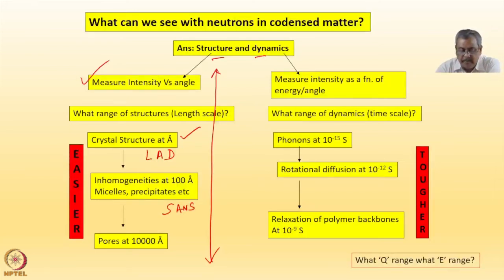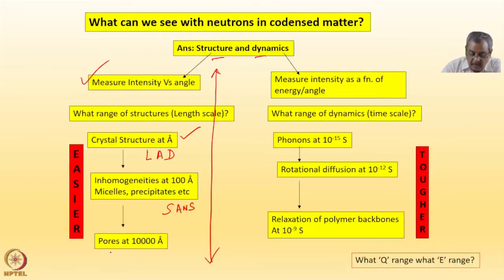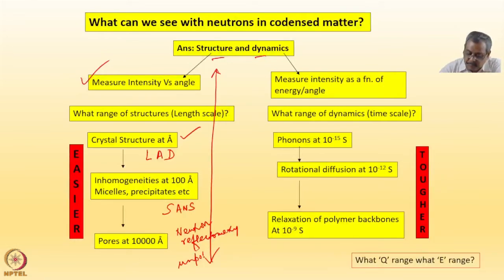Then I talked about SANS where you can see micelles, precipitates and inhomogeneities at typically about 10 nanometers, 100 angstroms to even micron size. And the last bit was reflectometry - neutron reflectometry, which was unpolarized, polarized, specular and off-specular.